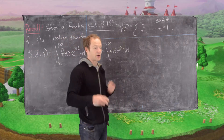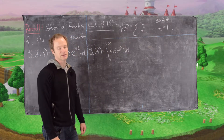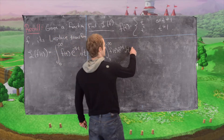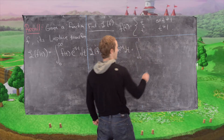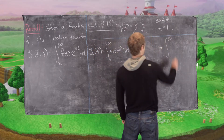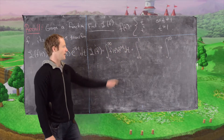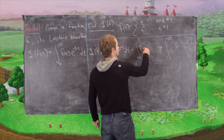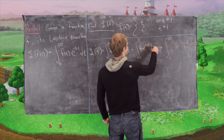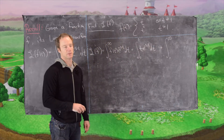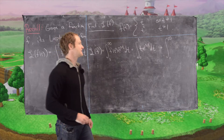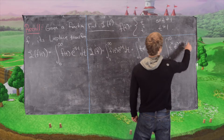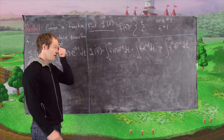The classic approach when dealing with integrals of piecewise defined functions is to split them up over their various regions. So we split this into the integral from 0 to 1 plus the integral from 1 to infinity. From 0 to 1, f has the form t, so we get t times e to the minus st dt. For t bigger than 1, we have t squared e to the minus st dt.